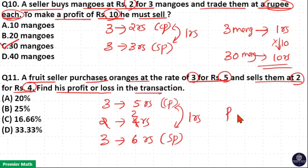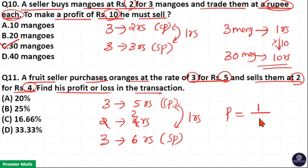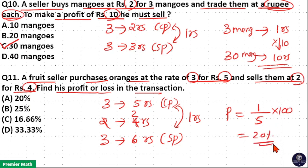Profit is equal to 6 rupees sell price out of 5 rupees cost price, which means profit here is equal to 1 rupee out of 5 rupees cost price, into 100, which is equal to 20 percent. So option A is your answer.